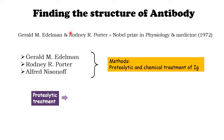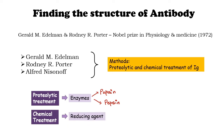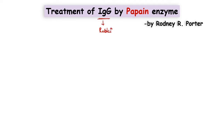During proteolytic treatment, they used enzymes — Papain and Pepsin. During chemical treatment, they used the reducing agent Beta-Mercaptoethanol, also called BME. In Rodney R. Potter's experiment, he used rabbit IgG and digested it with the enzyme Papain. The source of Papain is Papaya — it is present in Papaya latex.